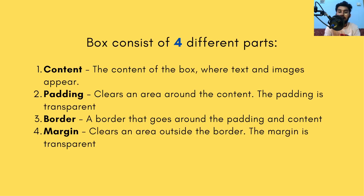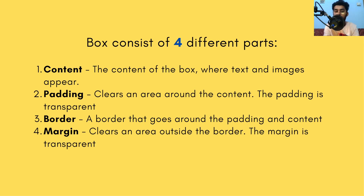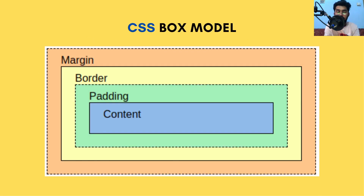Just consider them as boxes, and the box has four different parts: the content, the padding, the border, and the margin. The content of the box is where the text or images appear. Padding clears the area around the content and is transparent. Margins are also transparent. The border goes around the padding and the content. So you have content, then padding, then border, then margin — that's the CSS box model.